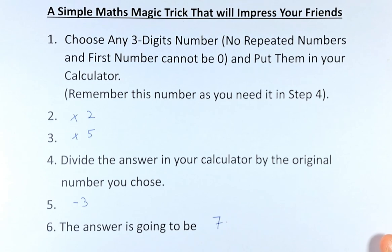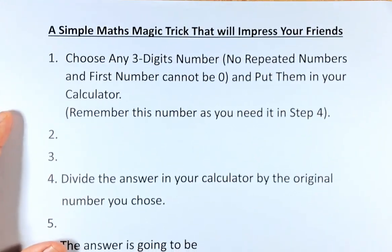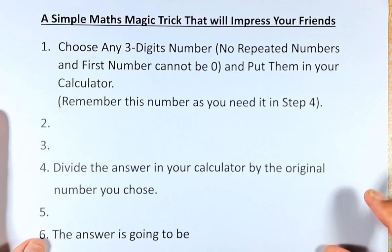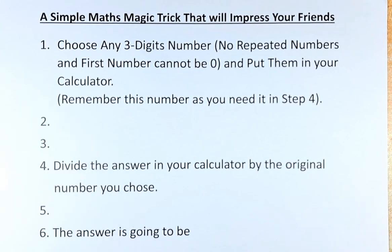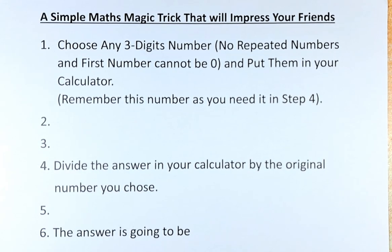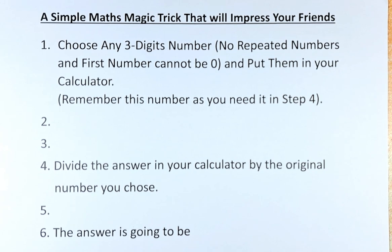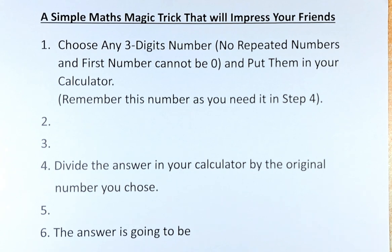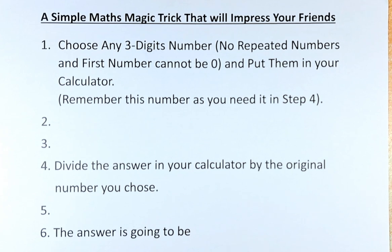Now, we are going to do the same trick but with different numbers. Again, you are going to choose any 3-digit number. It cannot be a repeated number. It means that you cannot have 1, 4, 4 or 8, 5, 5. All the 3 numbers must be different. And the first digit cannot be 0. Got it? Now, put them in your calculator.